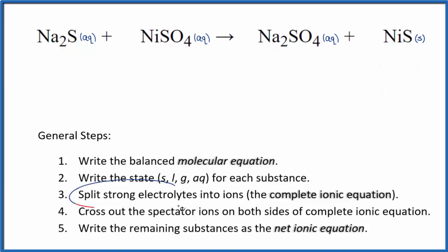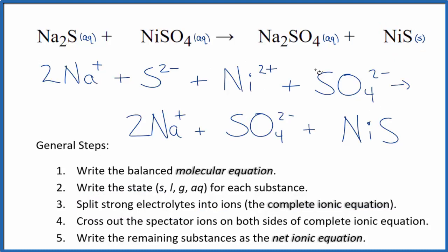Now we can split the strong electrolytes into their ions for the complete ionic equation. In ionic equations we don't split apart solids so we're going to leave the NiS together. That'll look like this. So this is the complete ionic equation for Na2S plus NiSO4.